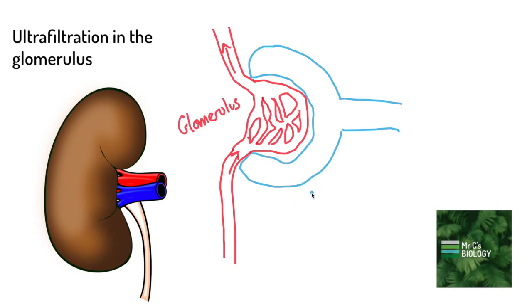And then in blue what we have is the Bowman's capsule and that is going to be where everything is filtered into. So our filtrate ends up and it's going to go into the nephron even further.